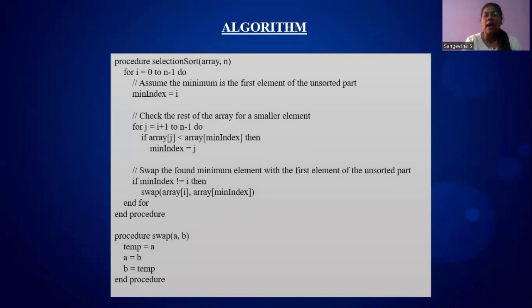Next is the algorithm for Selection Sort. There is a function called Selection Sort with parameters array and n, where n is the size of the array. For i equals 0 to n minus 1, as we know that the array index starts from 0 and ends at n minus 1, we initialize the minimum index as the value of i.